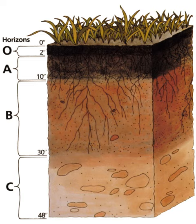Cryptopores are pores too small to be penetrated by most microorganisms. Organic matter in these pores is therefore protected from microbial decomposition. They are filled with water unless the soil is very dry, but little of this water is available to plants and water movement is very slow.